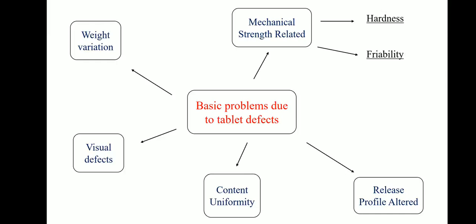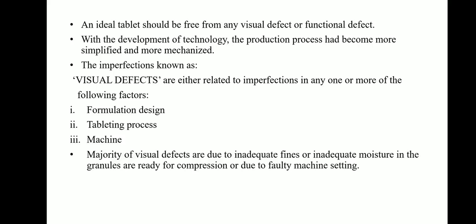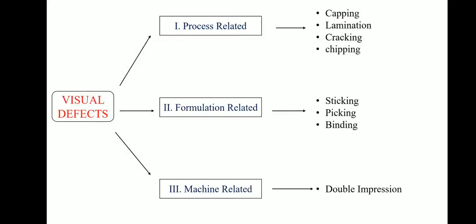The fifth problem is visual defects. Visual defects are basically known as imperfections. An ideal tablet should be free from any visual or functional defect. Visual defects are related to imperfections in formulation design, the tableting process, or the machine. Majority of visual defects are due to inadequate fines or inadequate moisture in the granules ready for compression, or due to faulty machine settings. Visual defects are classified as process related, formulation related, and machine related.